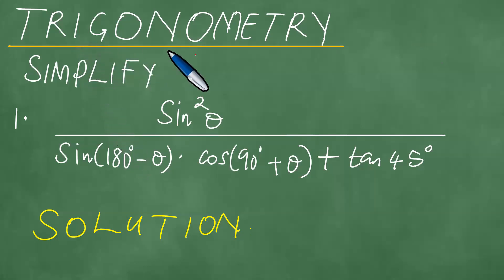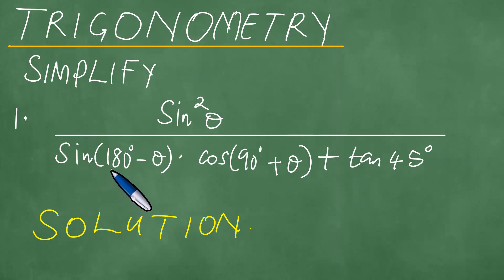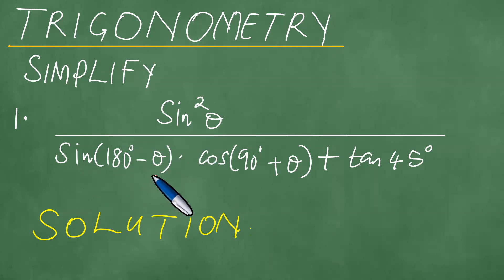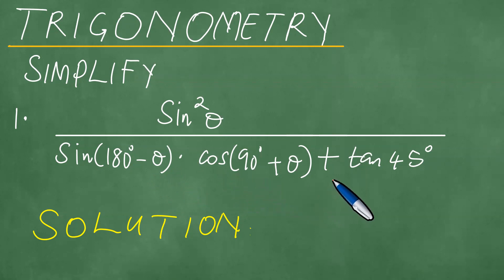We're attempting to look at trigonometry this time around, looking at problems that require us to simplify — the type of questions that focus on reduction formulae. The notion of reduction formulae is at the center of trigonometry at school level. If you need to simplify sine squared of theta divided by the sine of 180 degrees minus theta, times the cosine of 90 degrees plus theta, plus the tangent of 45 degrees, we'll look at the solution step by step.